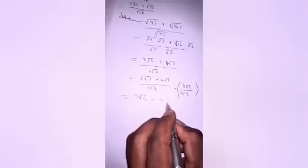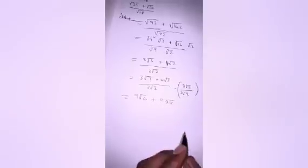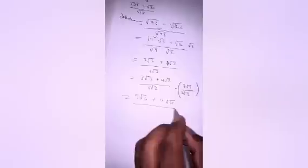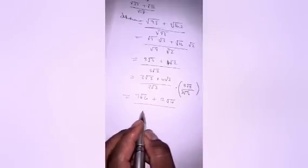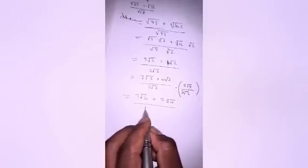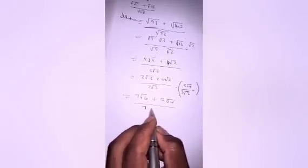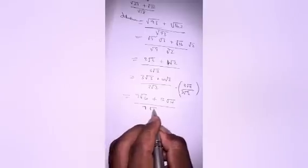2 times 2 is 4, all divided by 3 times 3 is 9, 2 times 2 is 4.